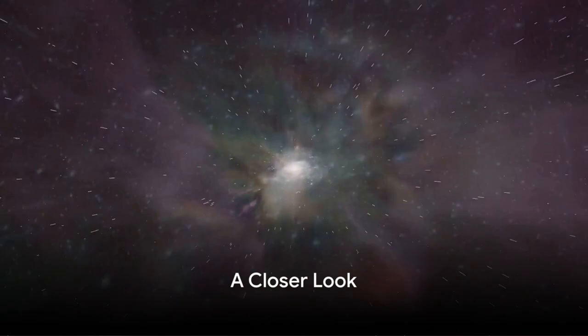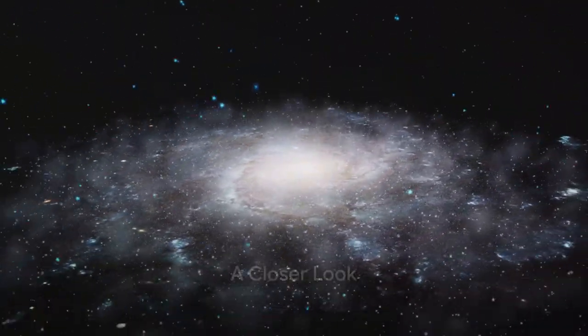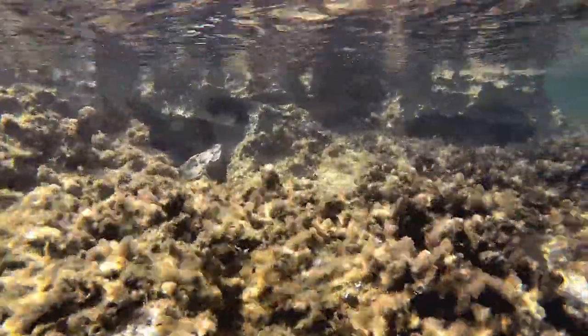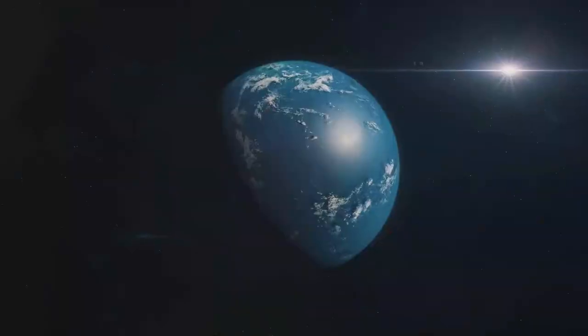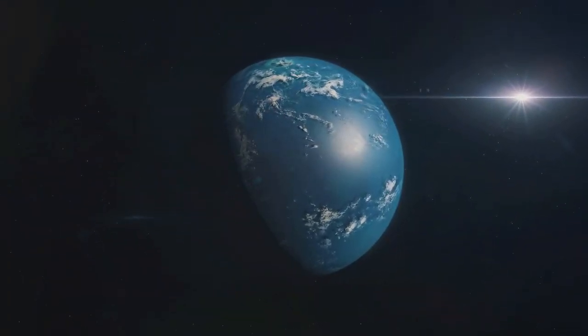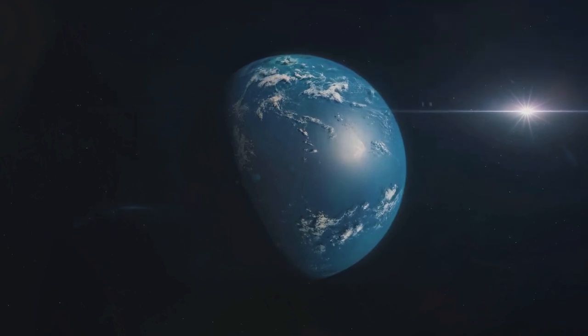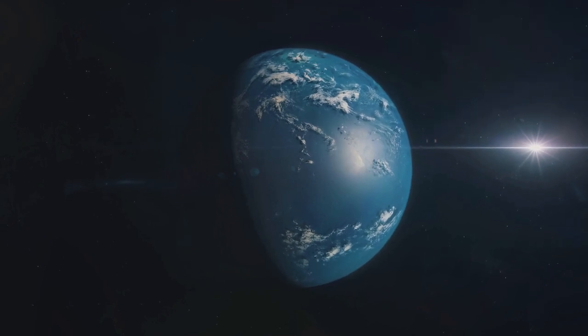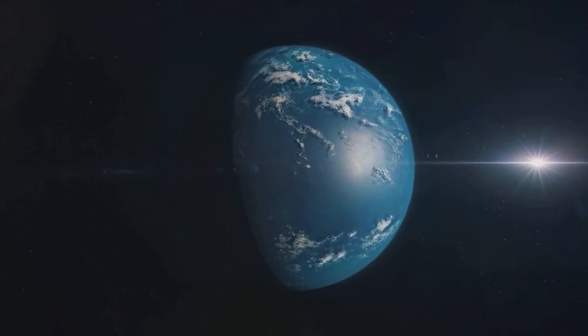The Great Filter could be any significant hurdle in our cosmic journey. Let's explore the possibilities. First off, we have abiogenesis, the emergence of life from non-living matter. It might seem straightforward on our planet but perhaps this step is rarer than we think, acting as a formidable filter in itself. Next are planetary conditions. For life to thrive a planet needs a stable climate, liquid water, and a protective atmosphere. Maybe these conditions are the exception rather than the rule in the universe, posing a significant barrier to life.